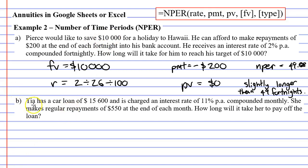Now looking at question B, Tia has a car loan of $15,600 and is charged an interest rate of 11% per annum compounded monthly. She makes regular repayments of $550 at the end of each month. How long will it take her to pay off the loan? Let's look at our formula and start with our rate. Our rate is 11%, except we need to remember it's compounded monthly, so we divide by 12 and also by 100, because we always convert rates to decimals. We don't need to work this out yet; Microsoft Excel and Google Sheets will do it for us.